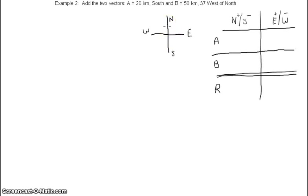We have another two vectors to add here. We have vector A is 20 kilometers south and vector B is 50 kilometers 37 degrees west of north. So we start by drawing in our vector diagrams.